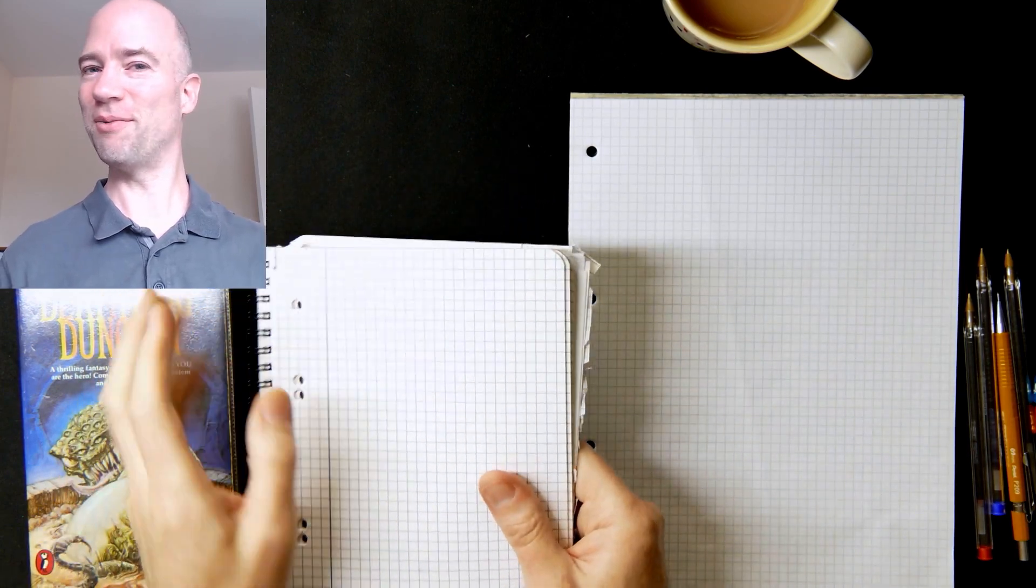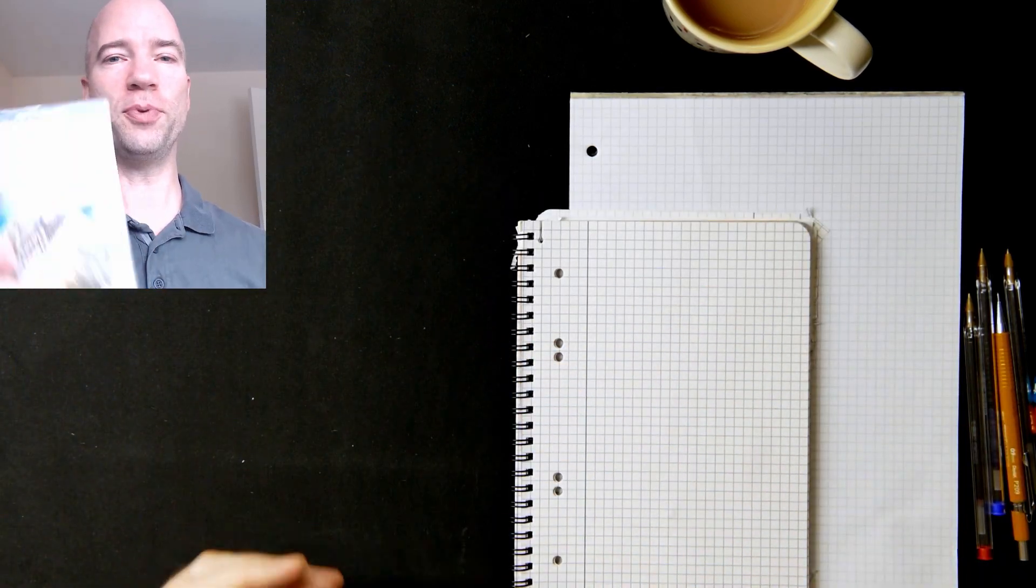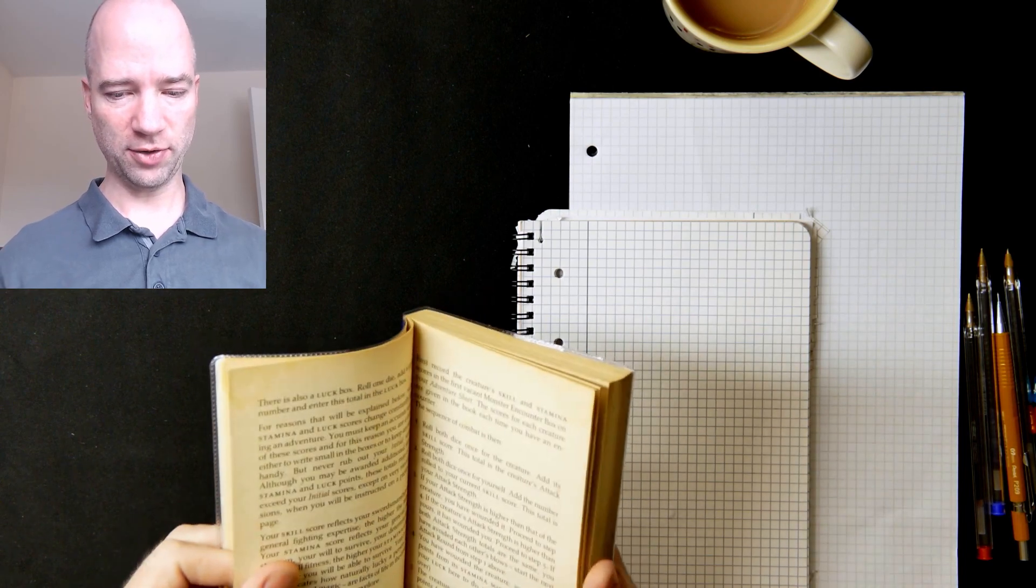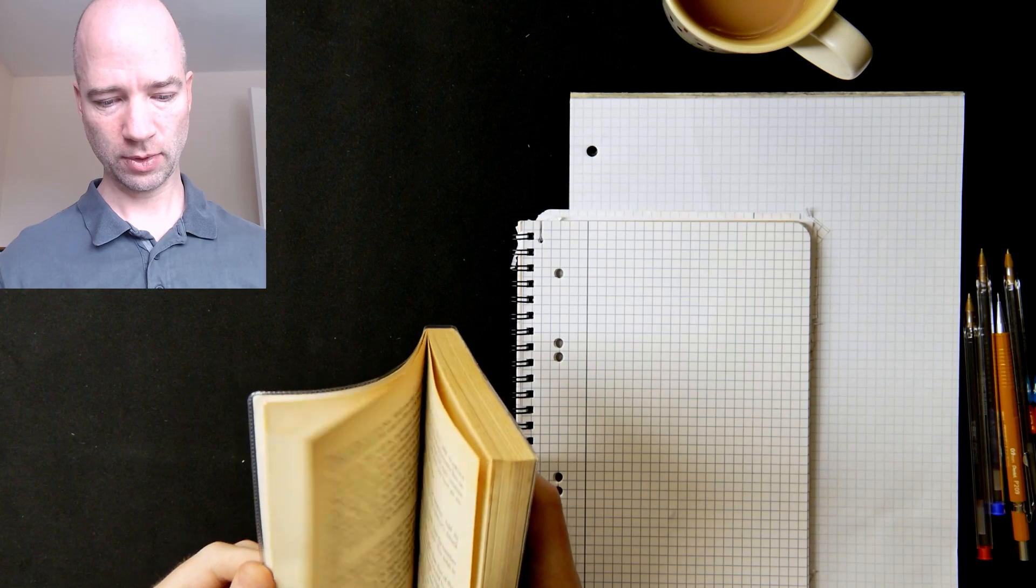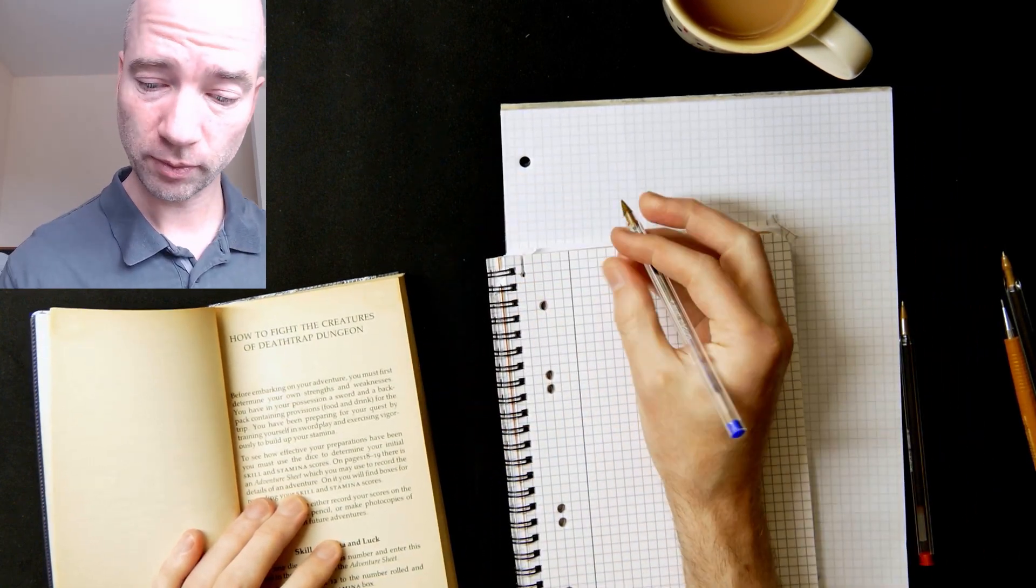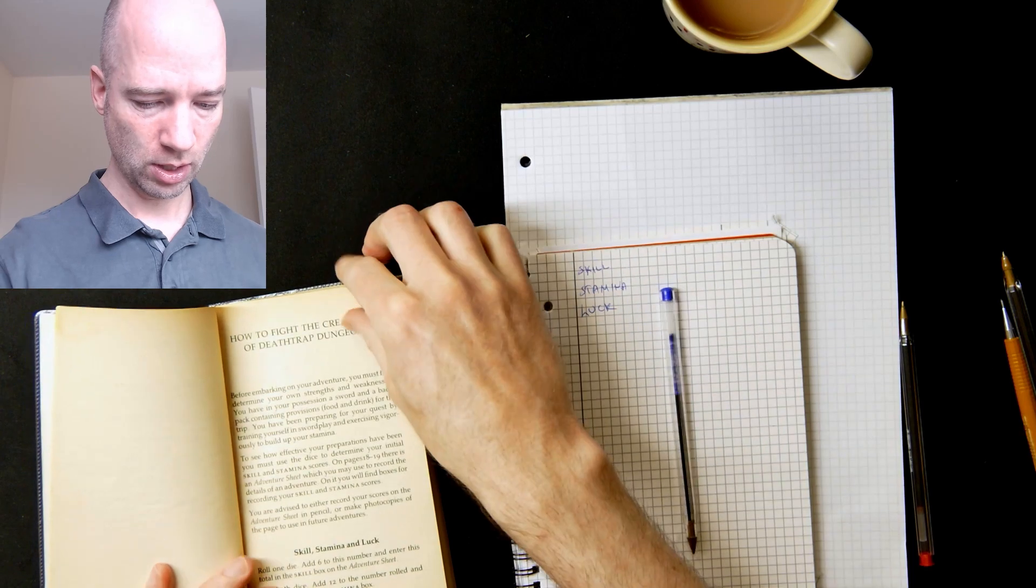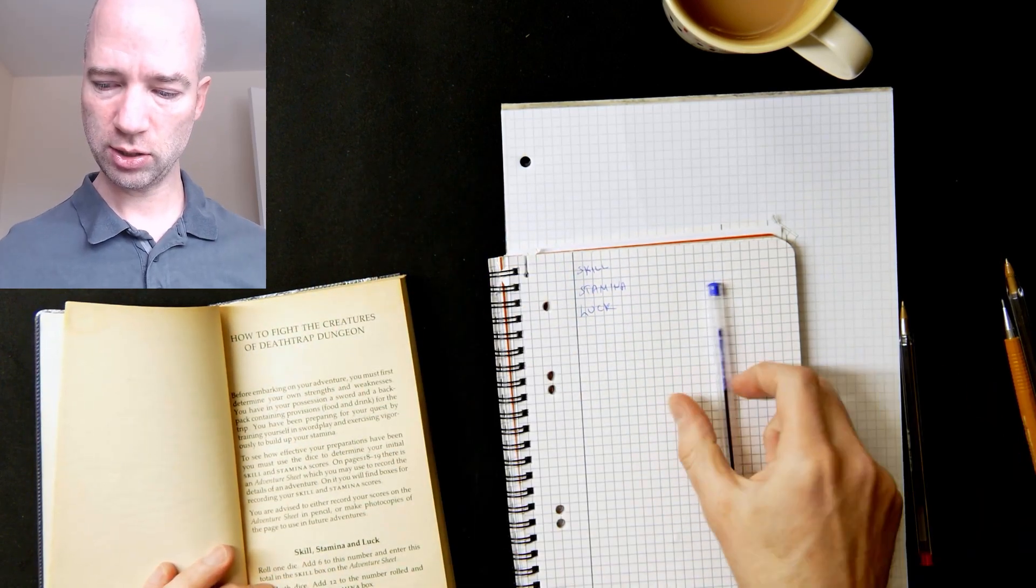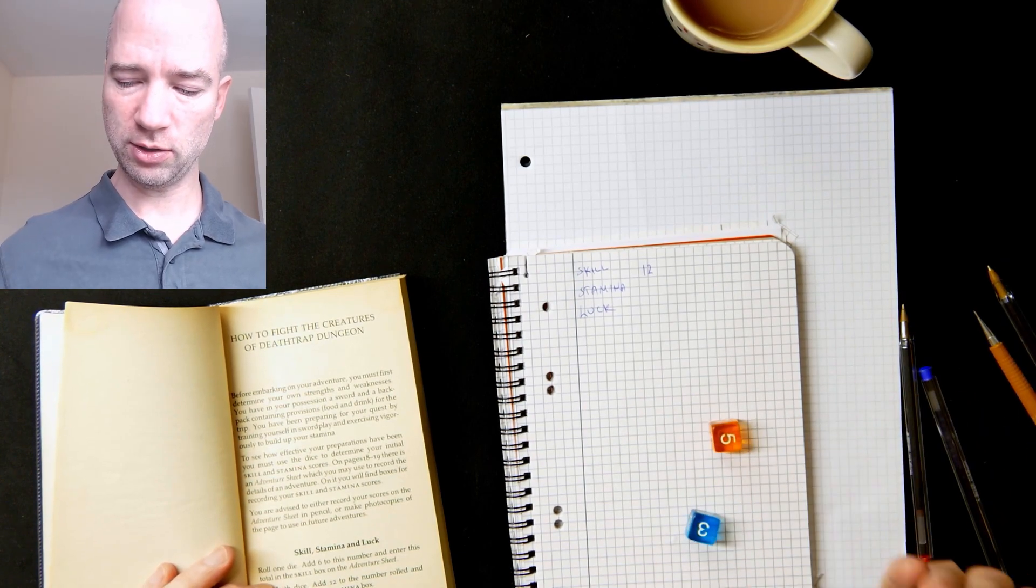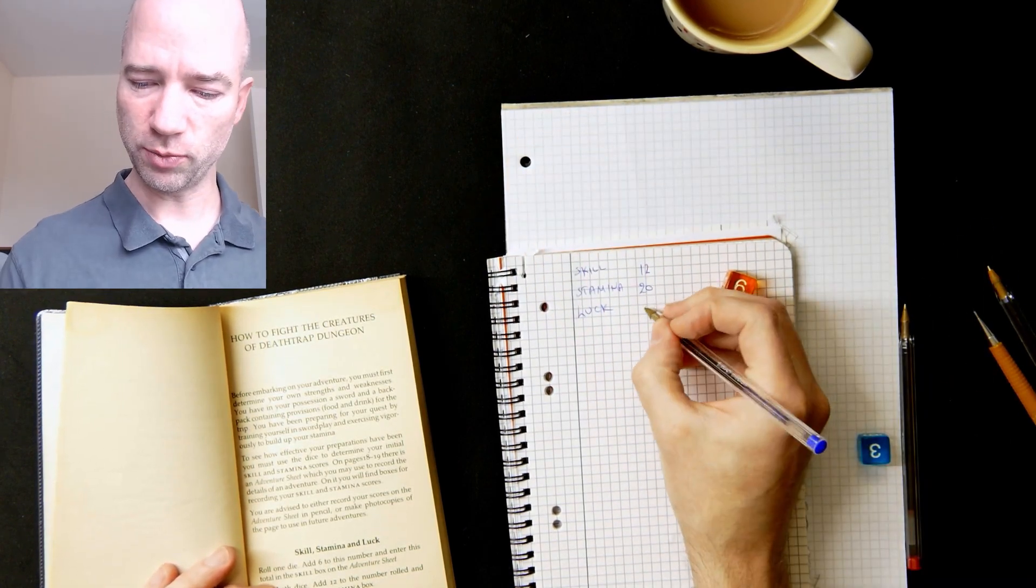Right, so Deathtrap Dungeon, I haven't opened this one yet properly. Let's find out if there are any special rules in this one. So first my initial scores, so we've got skill, stamina, and luck. Skill: one die plus six, twelve. I think that might be useful. Stamina: 8 plus 12, that's 20. And luck: oh my, that's a bit much actually. So really good stats to start with, although usually it's not the stats that kill me or the stats that make you die in these ones, you end up in some kind of trap or other where your abilities are simply not going to save you, you make a wrong decision and that is you.